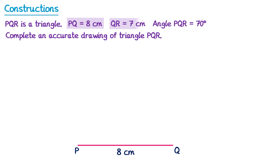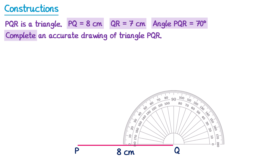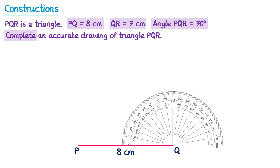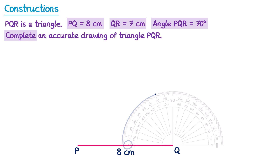Next we have the line QR, which is 7 centimetres, but also we're told that angle PQR is 70 degrees. In this question it uses the word 'complete' rather than 'construct', and it hasn't mentioned that we only need to use a ruler and compasses, which means we're allowed to use a protractor. So we can take a protractor and place it on the point Q. Since angle PQR needs to be 70 degrees, we'll mark on where 70 degrees would go. The zero here is on the line PQ, which tells us we'll need to use the outside scale. Going around the outside scale to 70 degrees and marking a point, any line from Q through that point will give us a 70 degree angle.